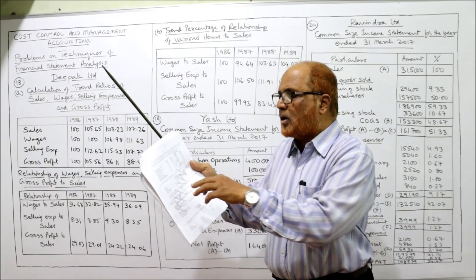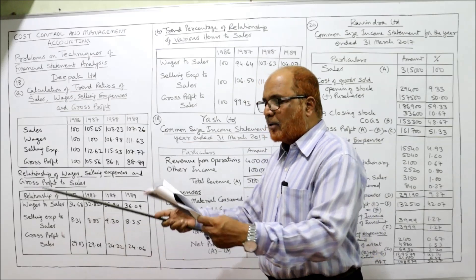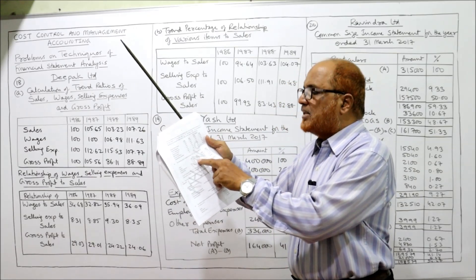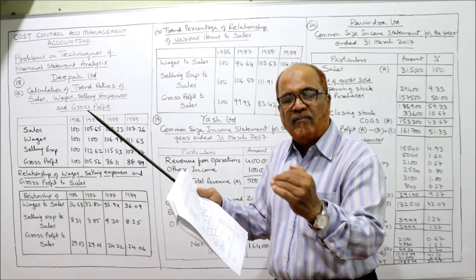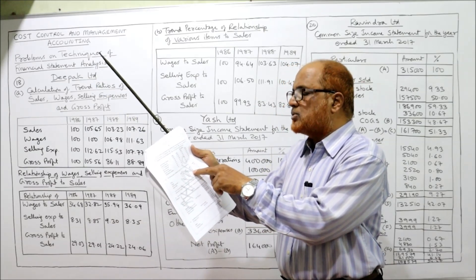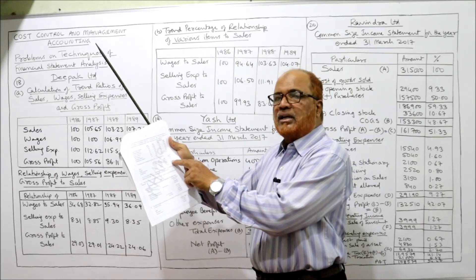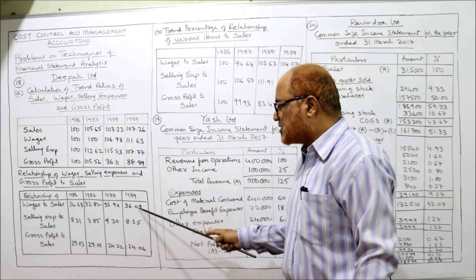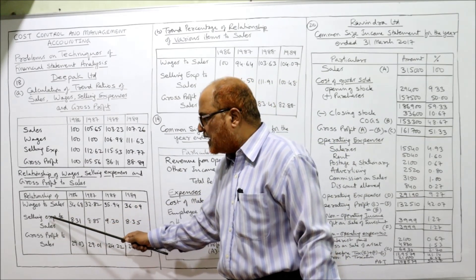1,07,500 divided by 3,10,000 into 100 gives 34.68. For 1987: wages are 1,07,500, sales are 3,27,500, so 1,07,500 divided by 3,27,500 into 100 gives 32.82. Third year: 1,15,000 divided by 3,20,000 into 100 gives 35.94. Last one: 1,20,000 wages divided by sales 3,30,500 into 100 gives 36.09. So we have calculated wages to sales.